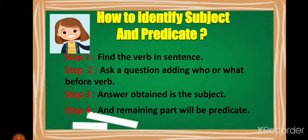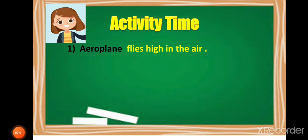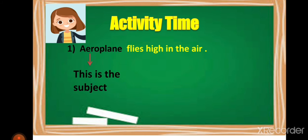If you have a sentence, first look for the verb. Then ask a question adding 'who' or 'what' to the verb, and whatever answer you get is the subject; the remaining part including the verb is the predicate. Example: 'Aeroplane flies high in the air.' The verb is 'flies.' Who flies? Aeroplane. So 'aeroplane' is the subject and 'flies high in the air' is the predicate.